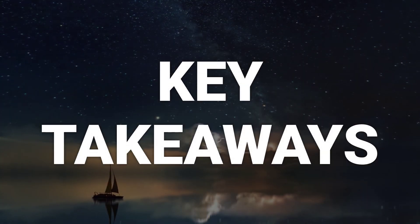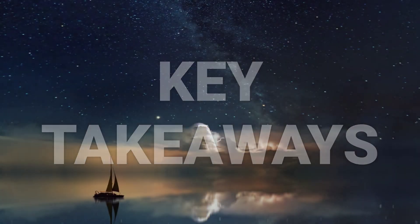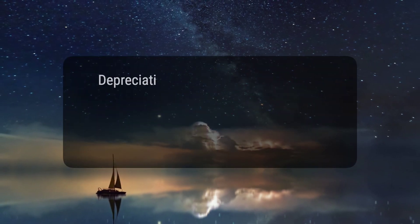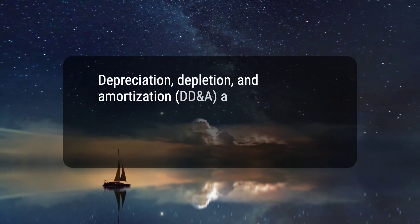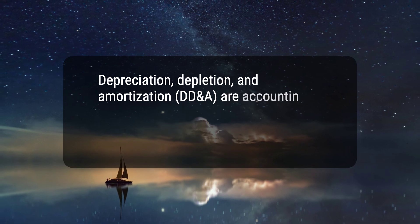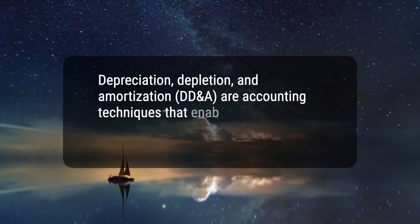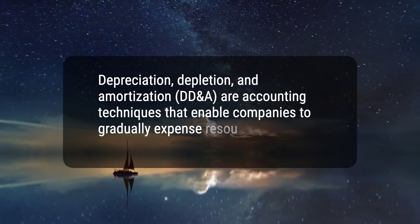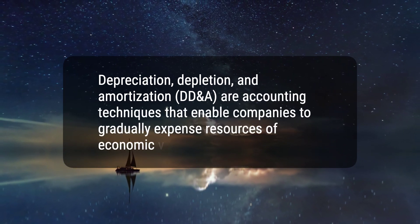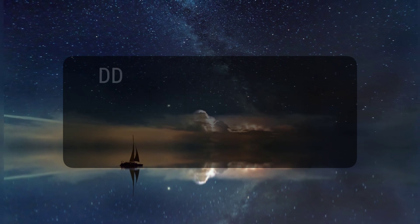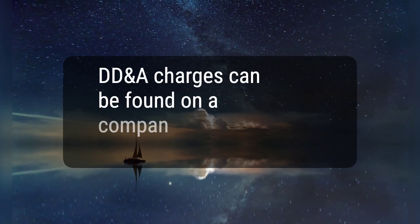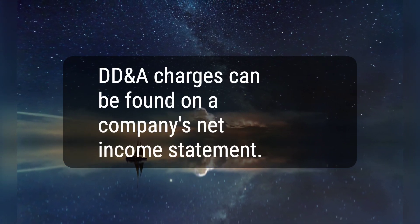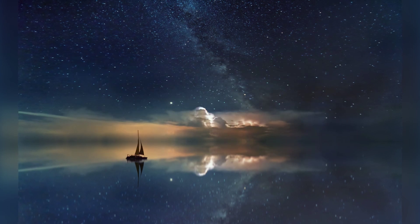Here are two key takeaways. 1. Depreciation, depletion, and amortization, DD&A, are accounting techniques that enable companies to gradually expense resources of economic value. 2. DD&A charges can be found on a company's net income statement. Hope this helps, thanks for watching.